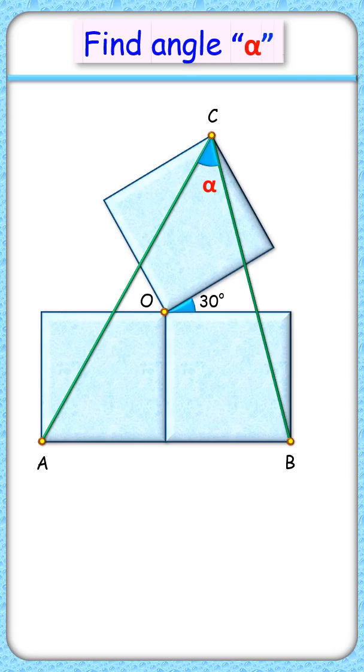This interesting question, we have three congruent squares which are sharing a common vertex O and making this angle of 30 degrees. The exciting part is, with this given data, we have to find the value of angle alpha. Let's check the solution.